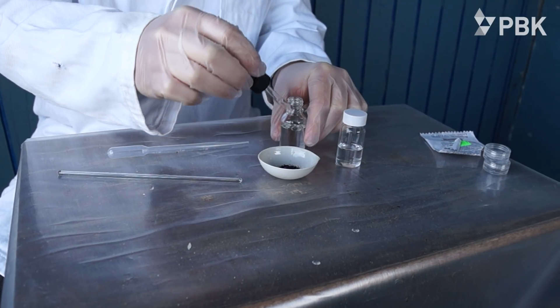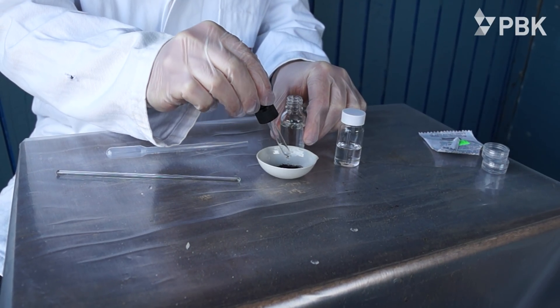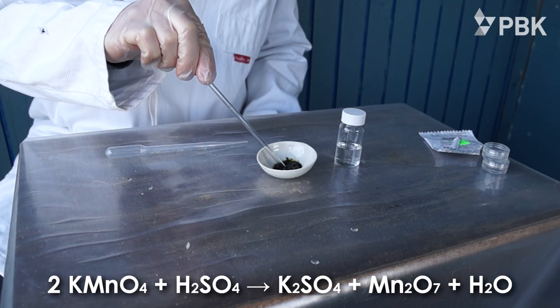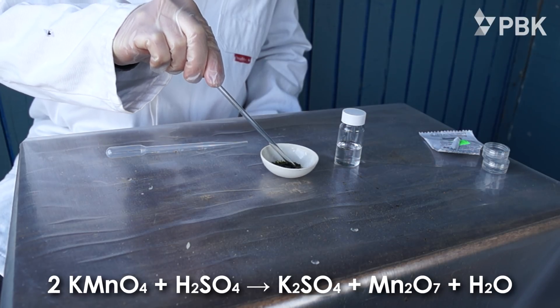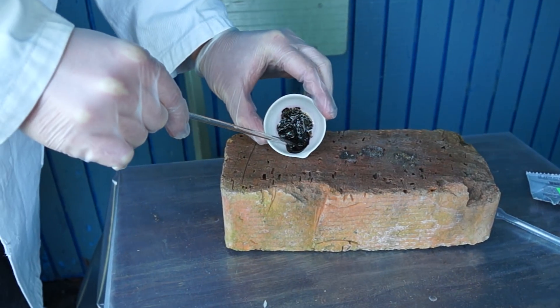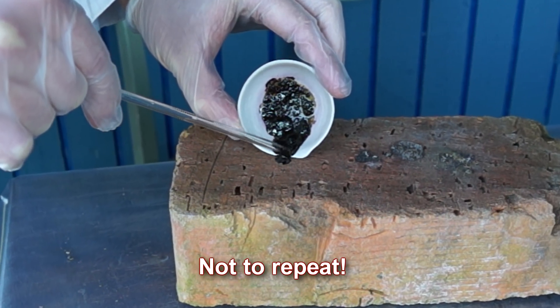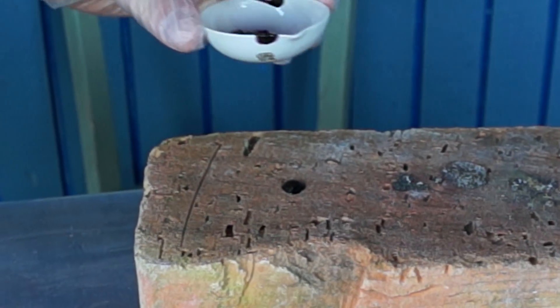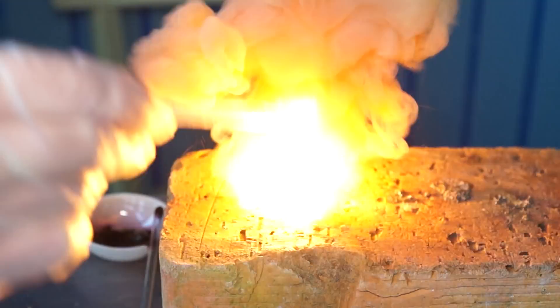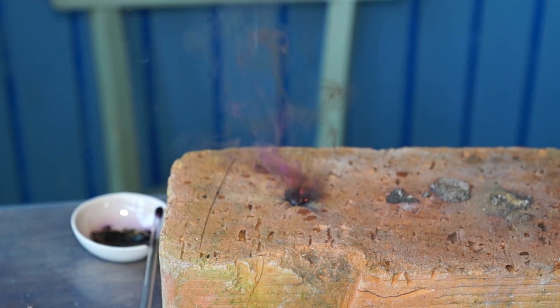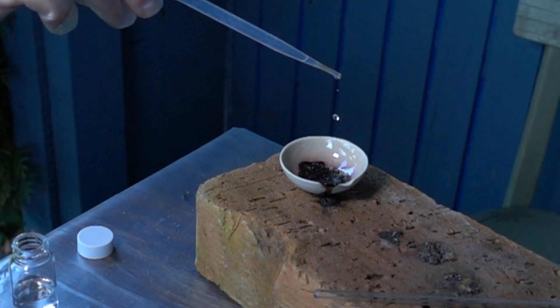If you mix potassium permanganate and concentrated sulfuric acid, you can obtain a hazardous substance, manganese oxide-7. Therefore, I highly recommend you to avoid repeating this experiment. Manganese oxide-7 is a green oily substance which can ignite any combustible material after a simple contact with it.